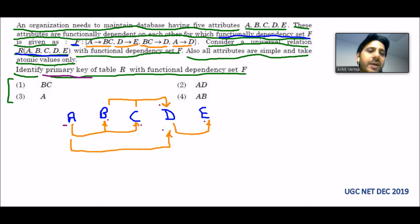So A is the essential attribute. To find the primary key, we have to take the essential attribute and take its closure.